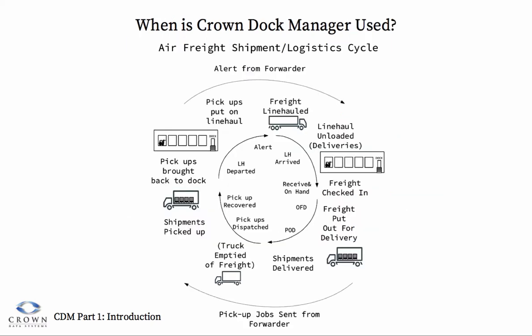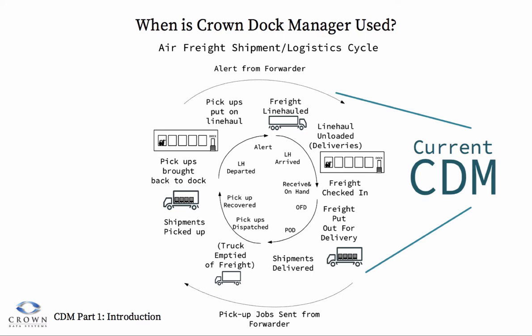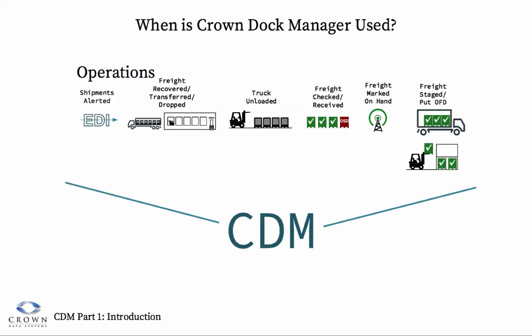Here we see the logistics cycle for an air freight trucking company. Crown Dock Manager handles this portion of the air freight logistics cycle at present. The current version of Crown Dock Manager handles inbound deliveries from when they are alerted, to when the freight is unloaded, to when it's checked in and potentially marked OS&D.